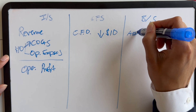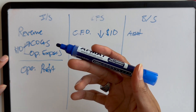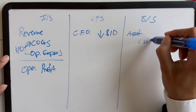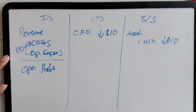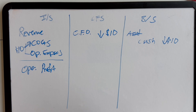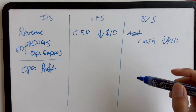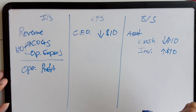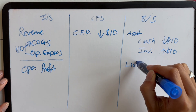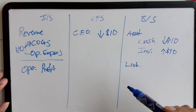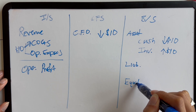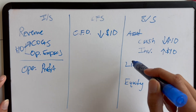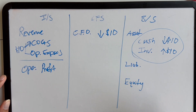Going over to the balance sheet — on our asset side, we just gave up $10 in cash to buy some inventory. So our cash is down by $10, but we got something in exchange: we actually got some inventory, and remember inventory is an asset. So we add that to the asset side of the balance sheet as well — our inventory goes up by $10. On the liability side of the balance sheet, nothing is changing, and on the equity side, nothing's changing either.